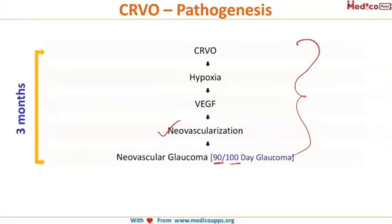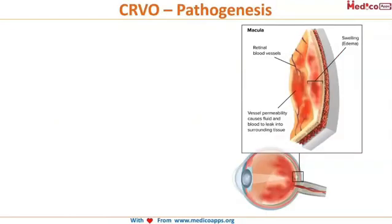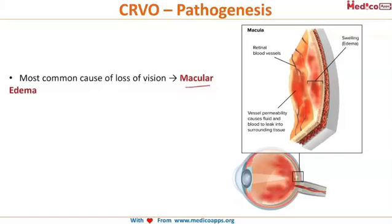What is the reason for the dimming of lights and sudden painless loss of vision? Obviously it cannot be neovascularization. The cause of loss of vision in CRVO is macular edema. There is an elevation of the macula because of the collection of fluid beneath it. This is the reason for the sudden painless loss of vision in CRVO.